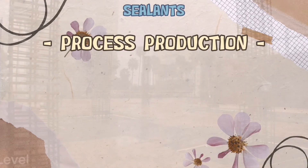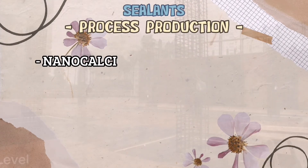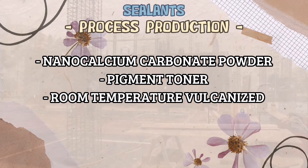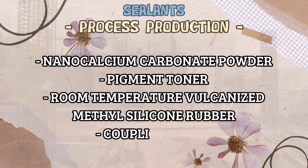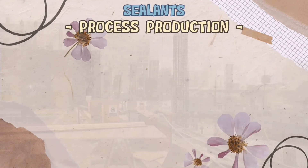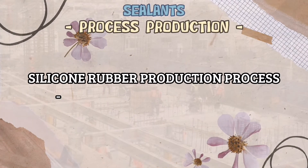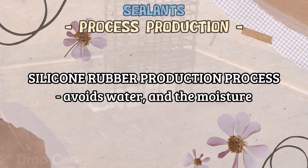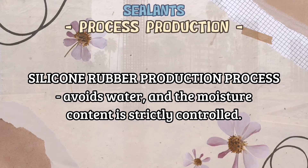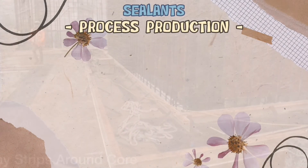The main raw materials for the production of sealants generally include nano-calcium carbonate powder, pigment toner, and room-temperature vulcanized methyl silicone rubber, coupling agent, catalyst, and other materials. The silicone rubber production process avoids water, and the moisture content is strictly controlled. Sealants mainly contain silicone rubber, polyurethane glue, and other products.